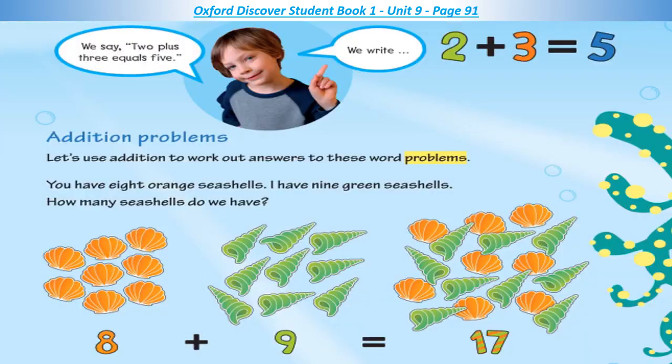We say: two plus three equals five. We write: two, plus sign, three, equals sign, five.